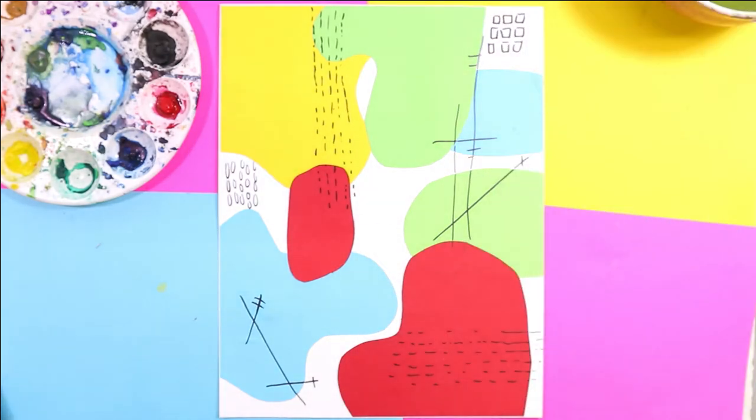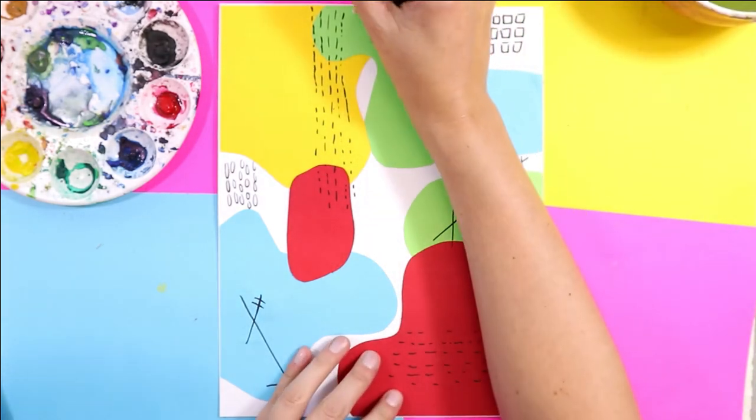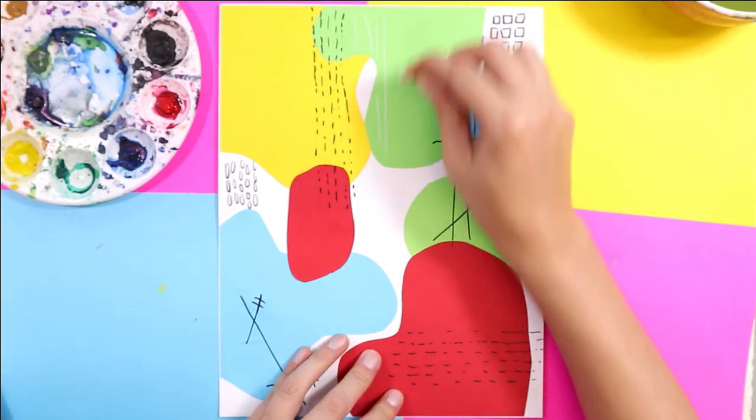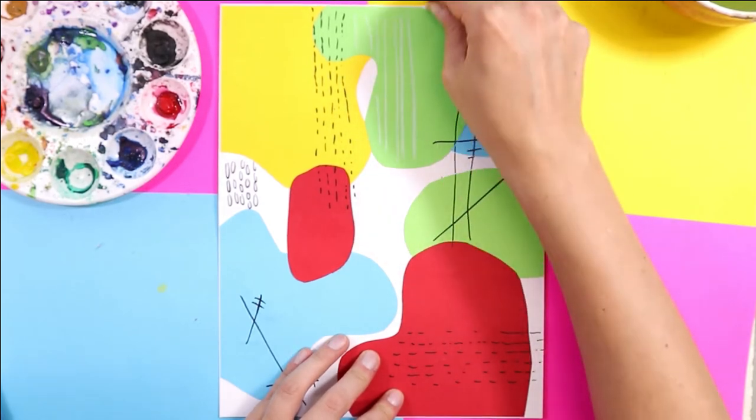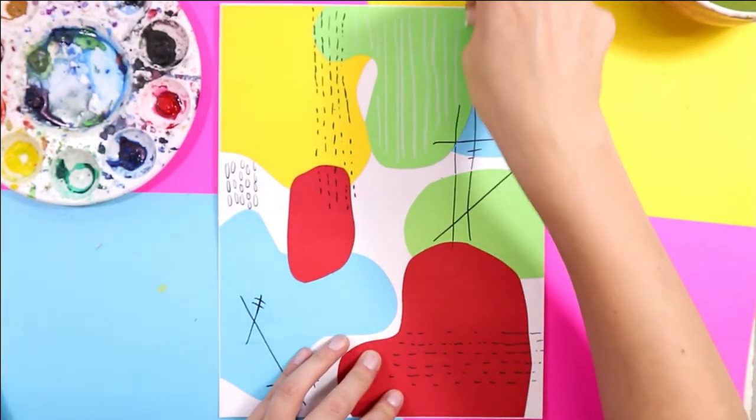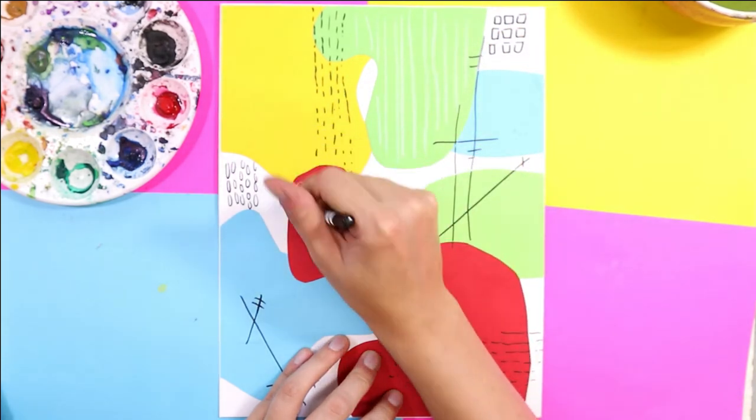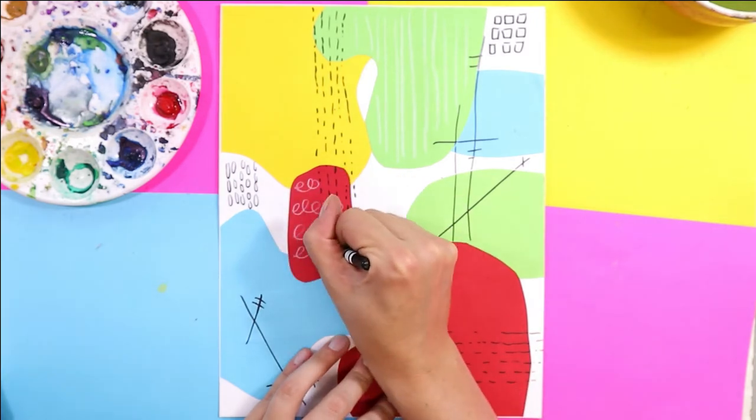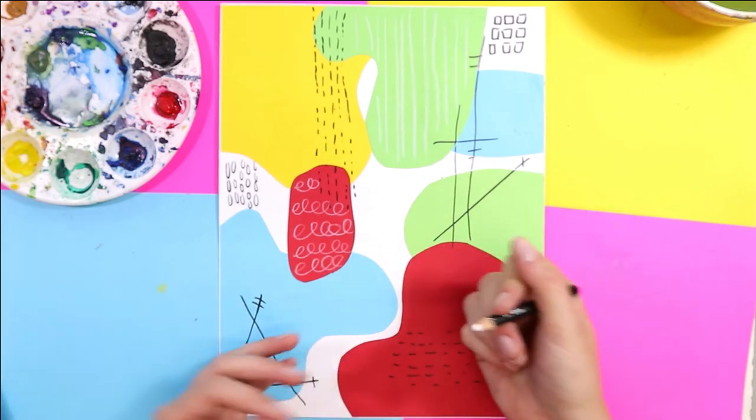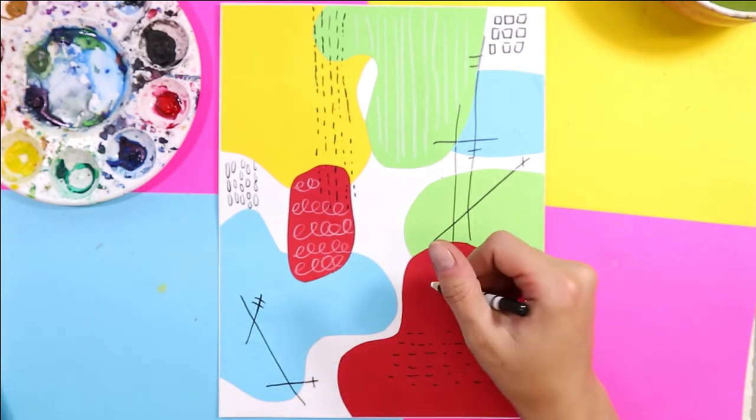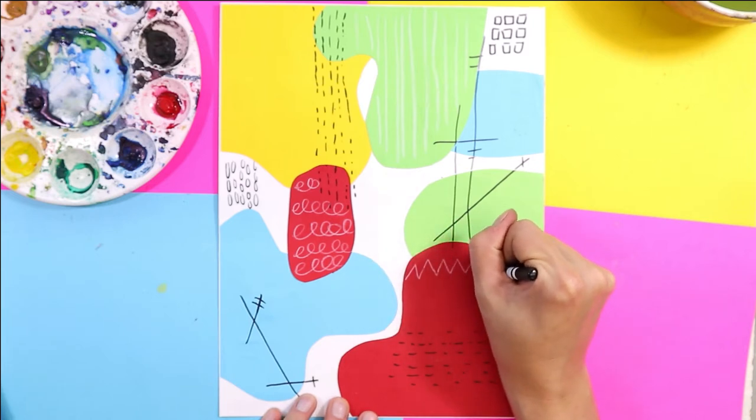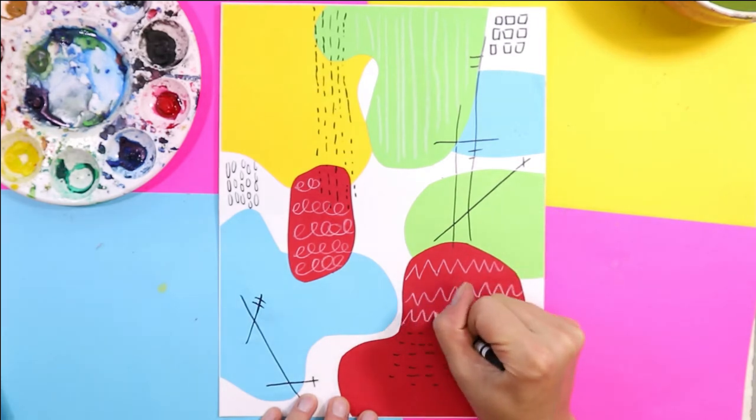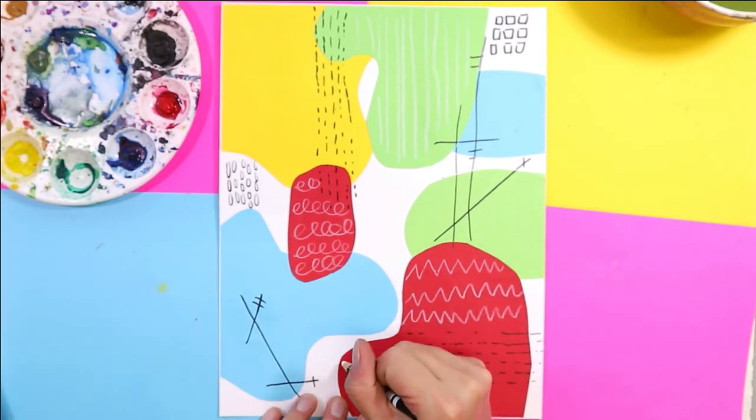Once you're done doing that, you can take a white pencil crayon or oil pastel and you can add some texture on your colored shapes by adding lines, zigzags, or swirls. Explore a variety of lines in this artwork. Line is an element of art. Line can be used to add pattern, create shapes, and add repetition and rhythm in your artwork.